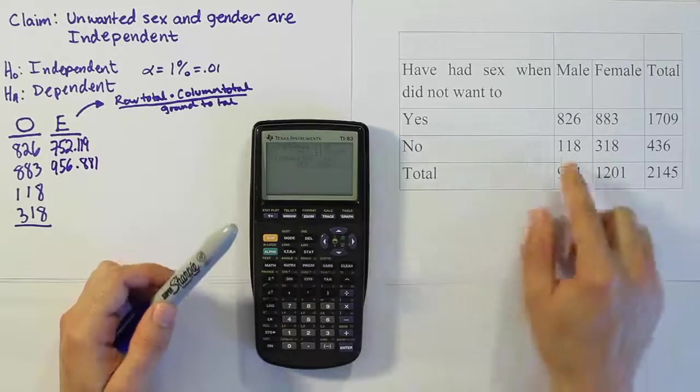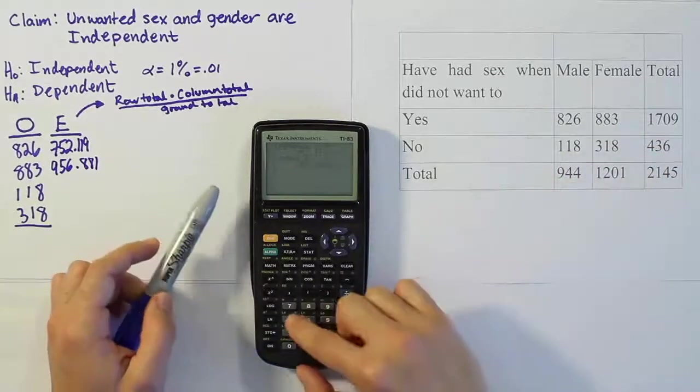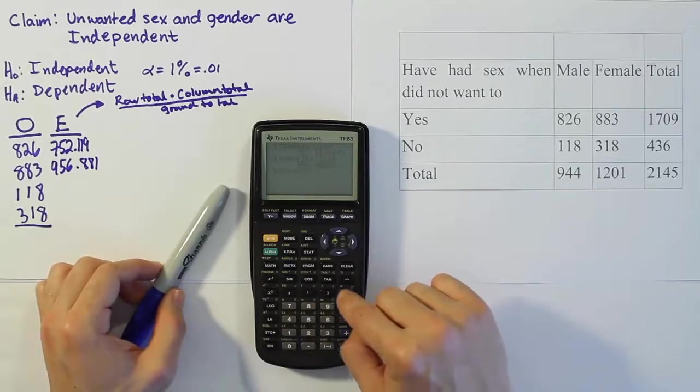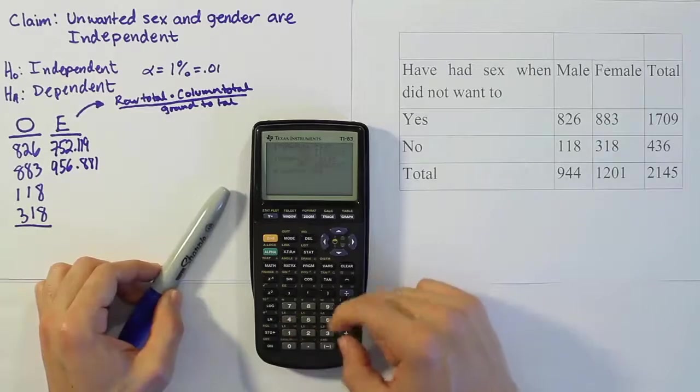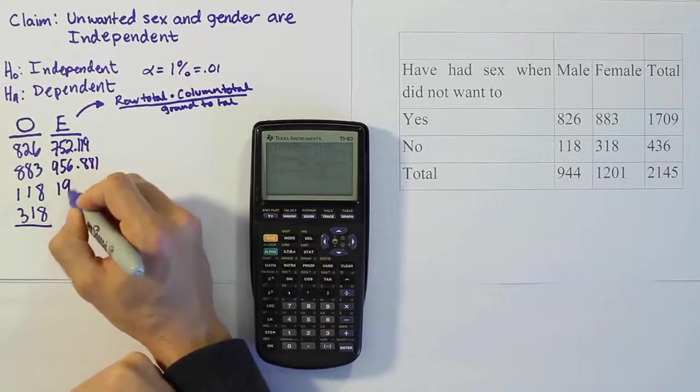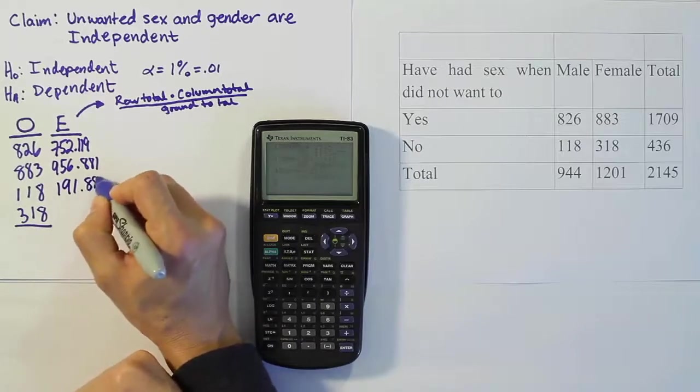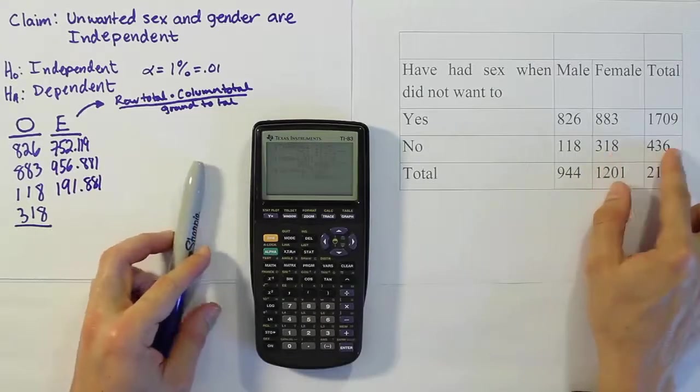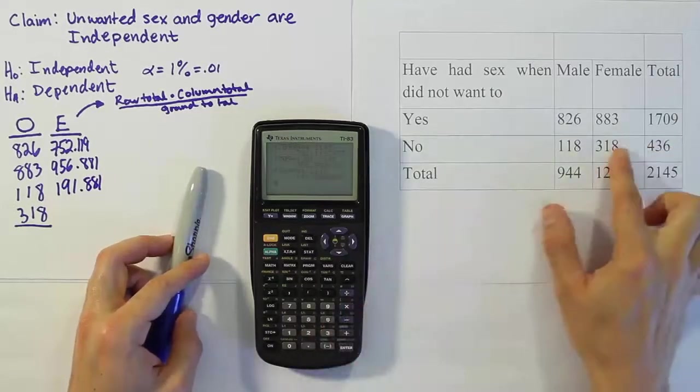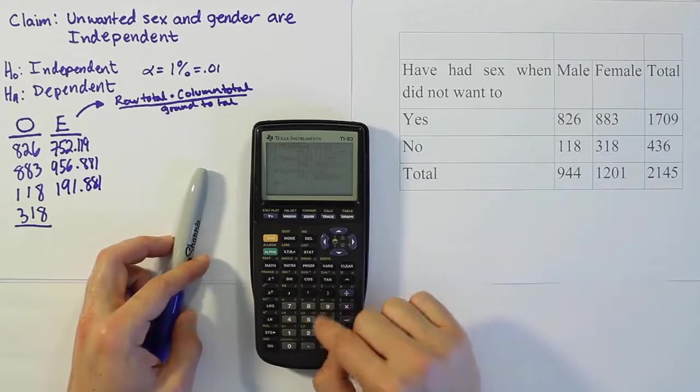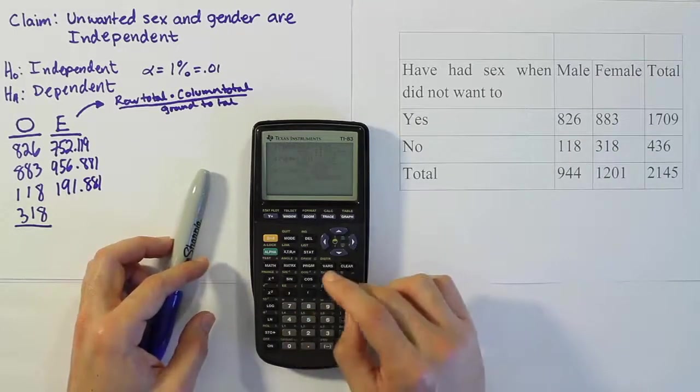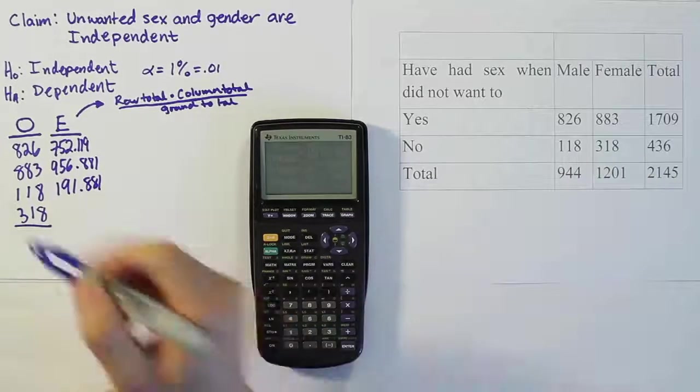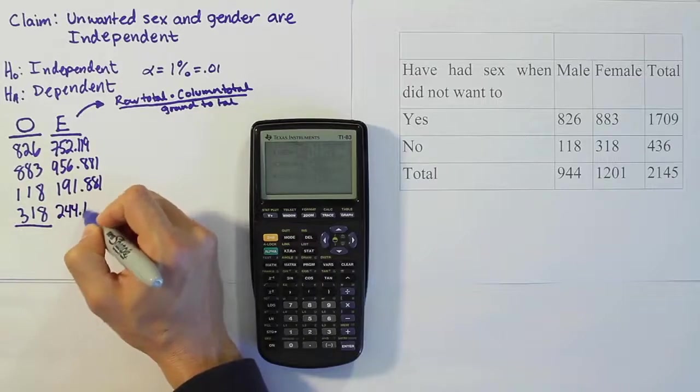Let's do it again for 118. It'll be 436 times 944 divided by the grand total 2145. We get the answer 191.881. And then last cell we have to work with is 318. It's 436 times 1201 divided by 2145. When we're finished with that we get 244.119.